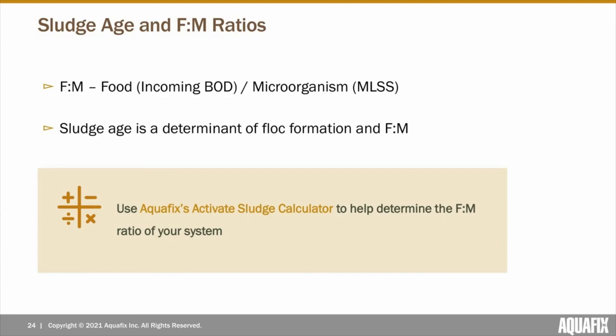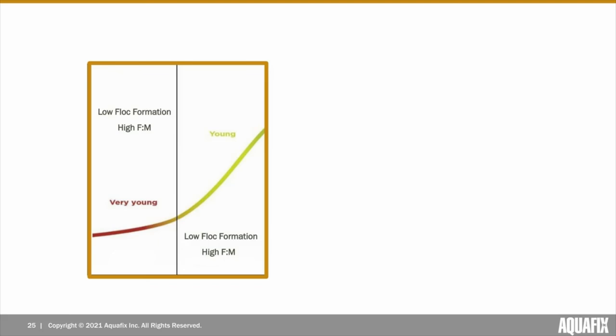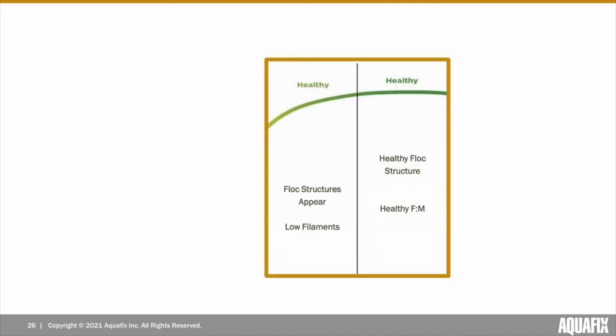Sludge age is also associated with the F to M ratio of a wastewater treatment system — the ratio of incoming food or influent BOD compared to the total number of microorganisms within a treatment plant. At a younger sludge age, we'll have a relatively low population of bacteria as the growth process is starting, and high F to M values as there is more proportional food coming in. Once the sludge age reaches a relatively healthy age, flock structures will become more ideal and the F to M ratios will be healthy. The ideal F to M ratios can vary in every plant.